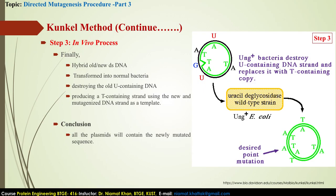In step 2, the in vitro process, we have introduced the desired mutation with a mismatched oligonucleotide primer and extended the new strand with Klenow fragment acting as a DNA polymerase. Now we have M13 DNA along with the inserted DNA in double-stranded form. The original or old strand contains uracil-incorporated nucleotides, while the new strand contains the desired mutation, as shown here with the old strand in black and the new strand in green.